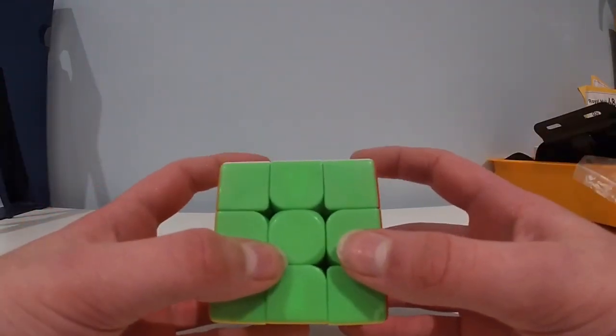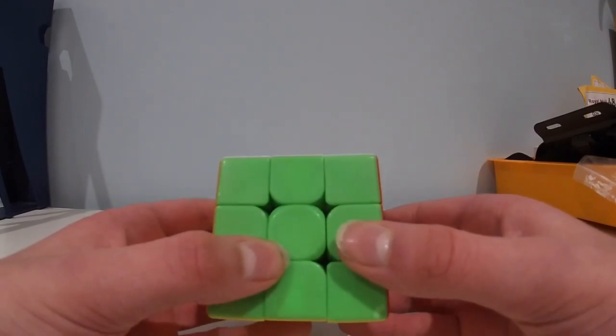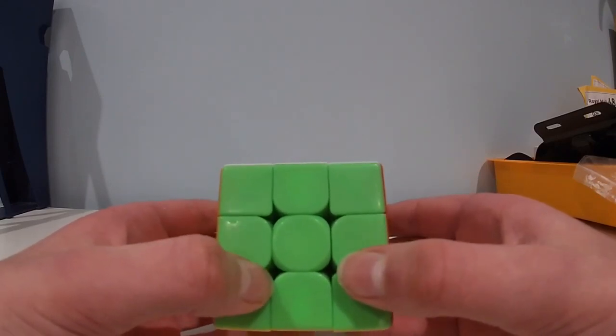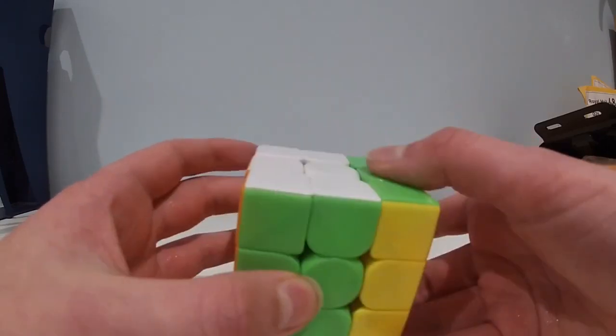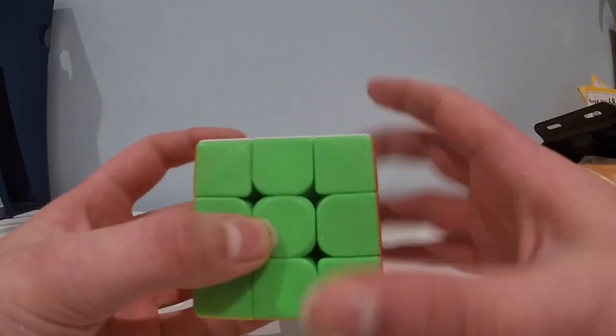Those finger tricks are all you need to get started with speedcubing and you can easily get sub 30 and maybe even sub 20 with those. You want to try and stay in home grip as much as possible as re-grips are slow.